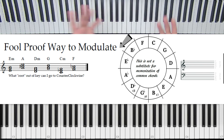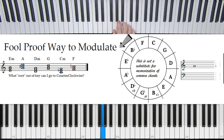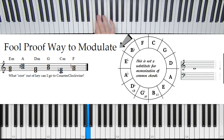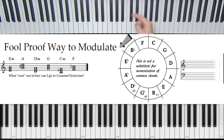But again, before we go further — this is not a substitute for memorization of common chords between closely related keys. Like C to F: there are four common chords and you should probably know those. Or G: there are four common chords. Two keys away like B-flat to C: there are two common chords; oppositely, C to D: there are two common chords. You should know those things; however, we can use this trick in the meantime.